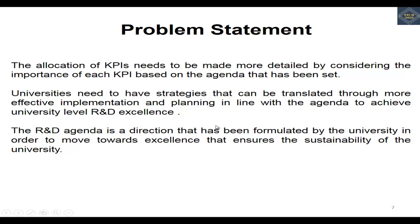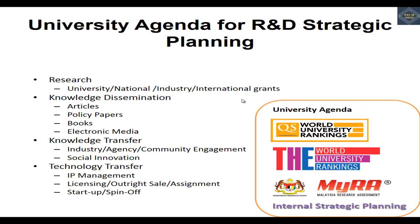This is actually part of our research. We have our own research framework, which is an integrated method for strategic planning, especially for R&D activities. But before we go into that, we need to prioritize the agenda — which one is the most important? For example, QS, THE, MIRA — which one is the most important? It has to come up with a measurable value that indicates the importance of the agenda, and we determine that value first before proceeding to more complex combinations.